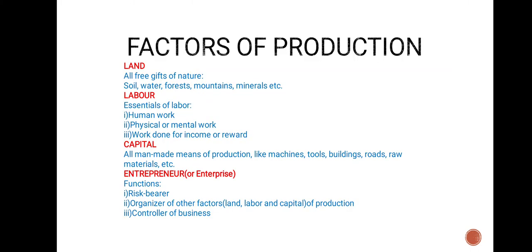Factors of production overview: Land includes all free gifts of nature — soil, water, forests, mountains, minerals, etc. Labor: essentials of labor include human work, physical or mental work, and work done for income or reward. Capital includes all man-made means of production like machines, tools, buildings, roads, raw materials, etc. Entrepreneur or enterprise — functions: risk bearer, organizer of other factors (land, labor, and capital of production), and controller of business.